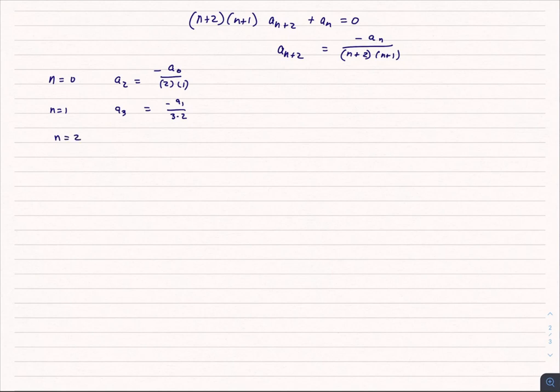When n is equal to 2, I get a sub 4 is equal to negative a_2 divided by 4 times 3. But I know what a_2 is. That's equal to negative a_0 divided by 2 times 1. So I can change it to positive a_0 over 4 times 3 times 2 times 1. When n is equal to 3, a_5 is equal to negative a_3 divided by 5 times 4. Again, I know what a_3 is, and that's what it works out to be in terms of a_1.